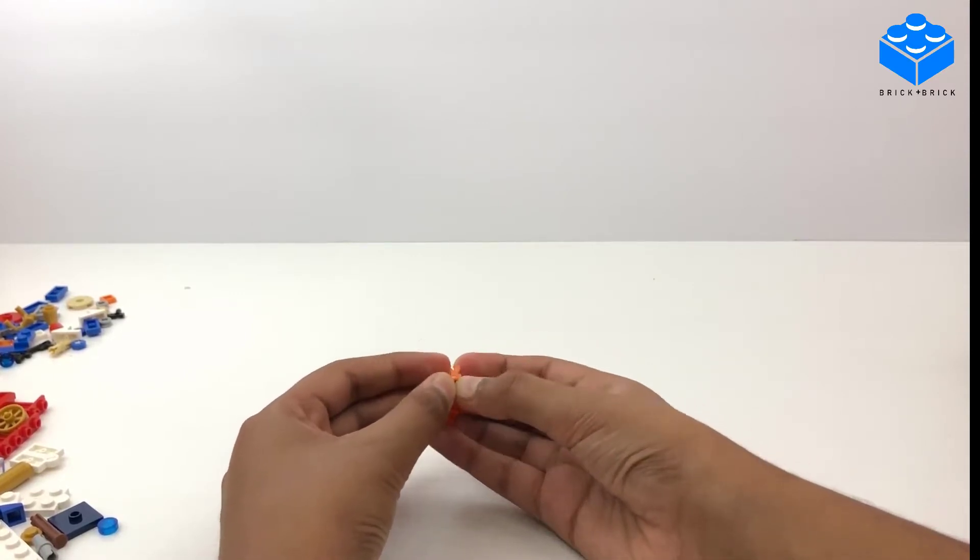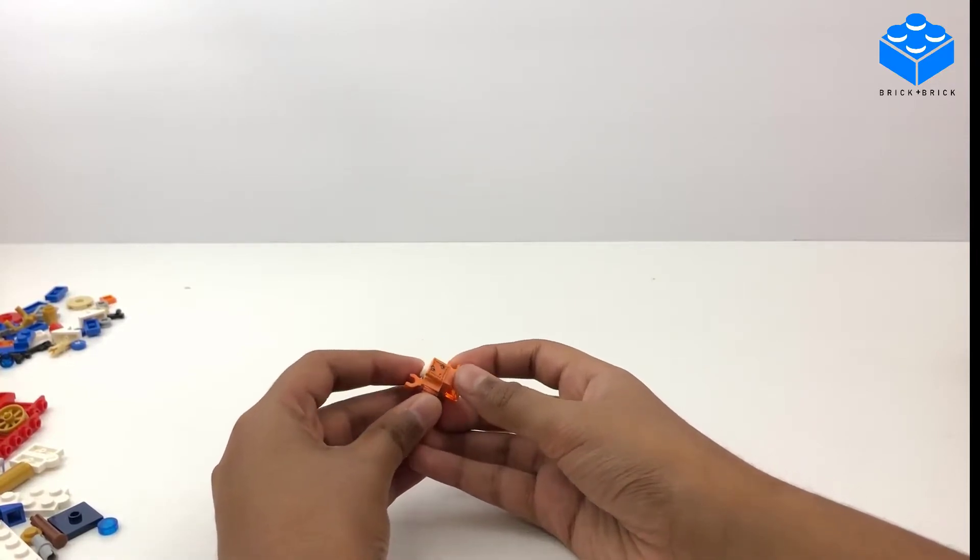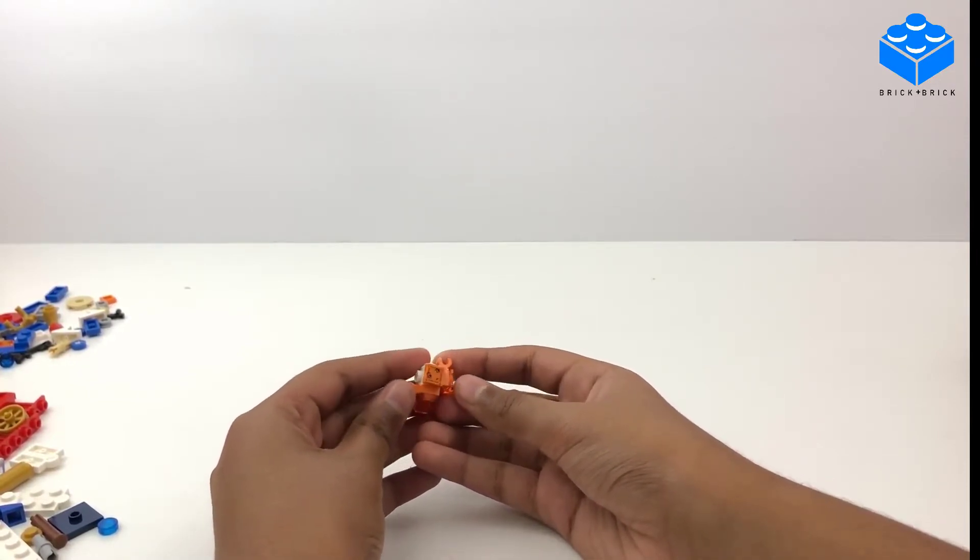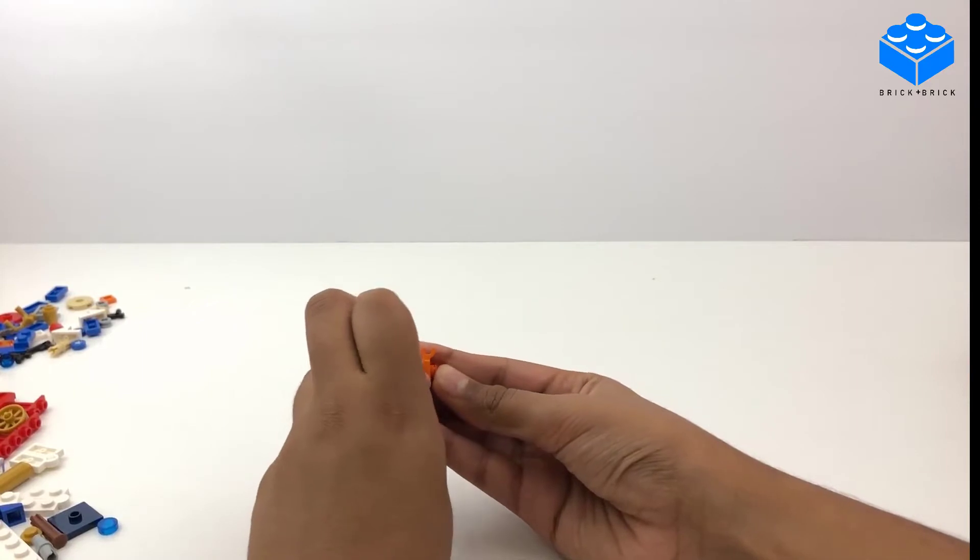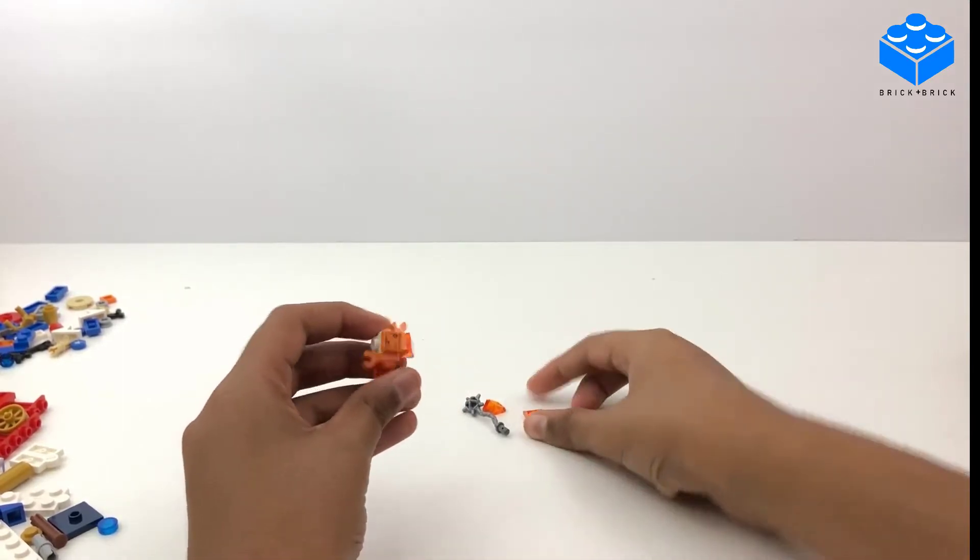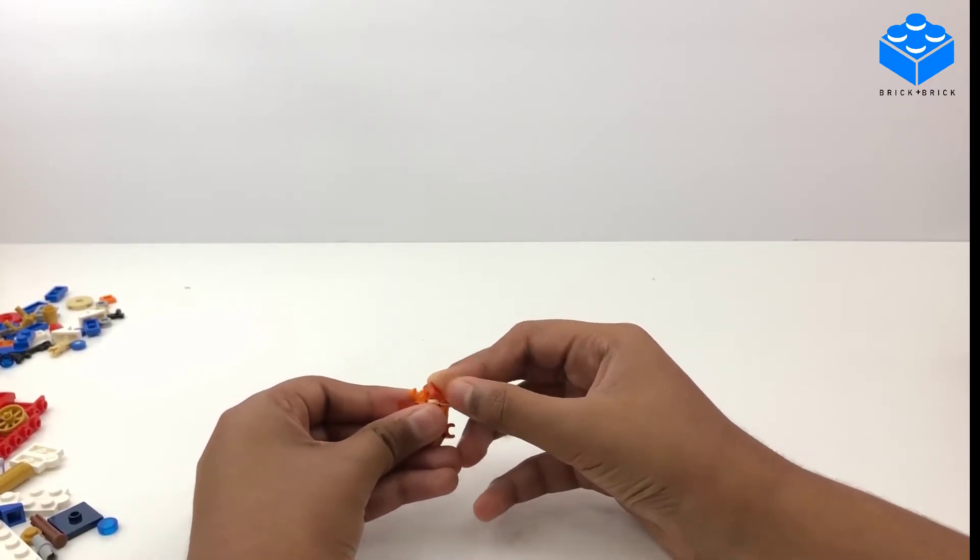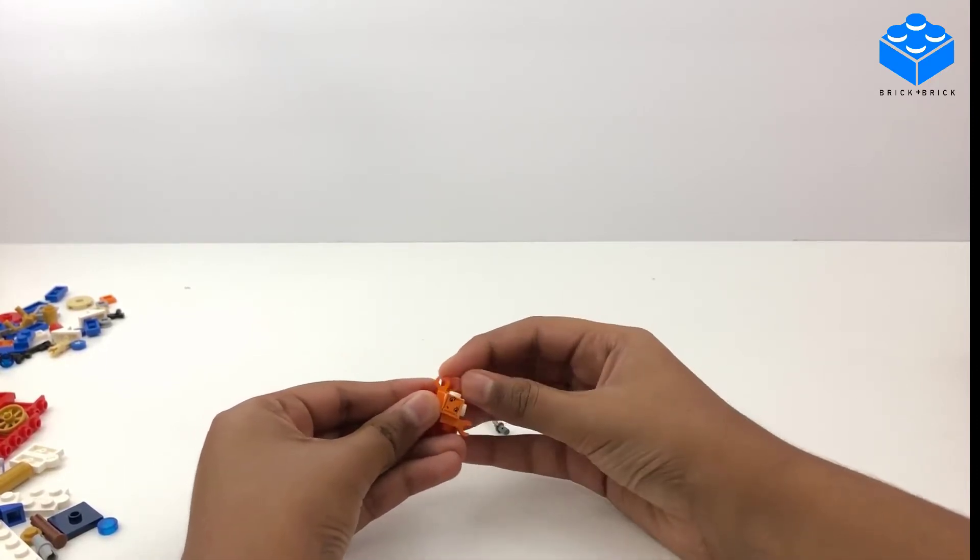So now it looks like that. You might turn them around if it's the wrong way. Then add two more pieces on the side.